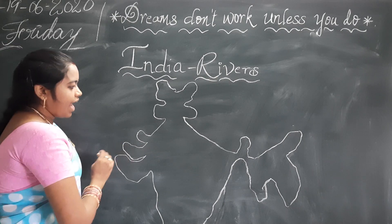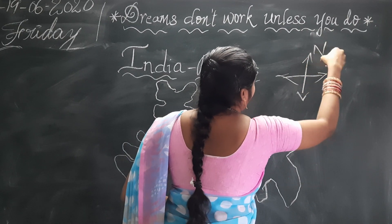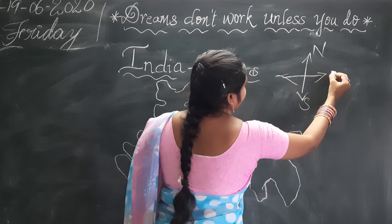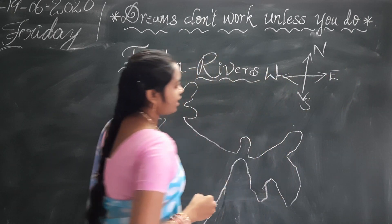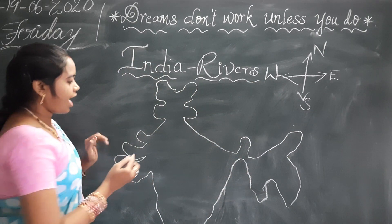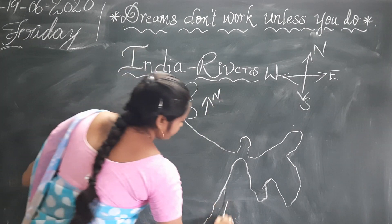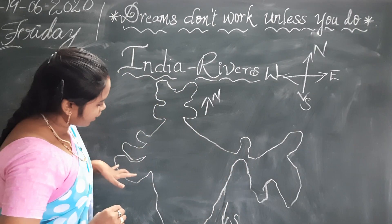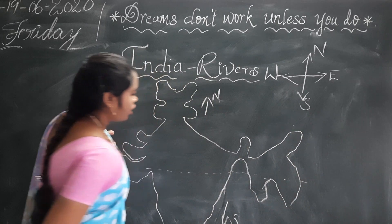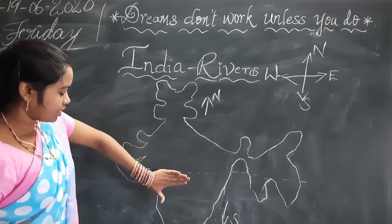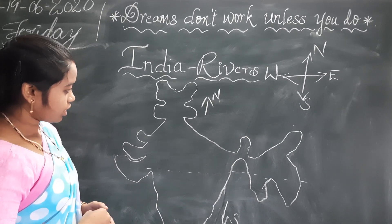So we have four main cardinal directions: north, south, east, and west. India is divided into north India and south India. The Tropic of Cancer passes through Madhya Pradesh state, West Bengal, and others. Above the Tropic of Cancer is called north India; below it is called south India.